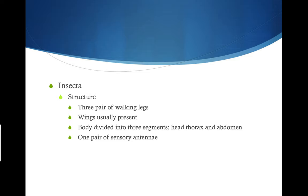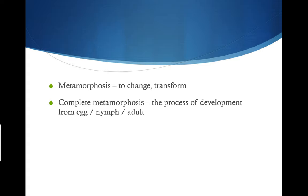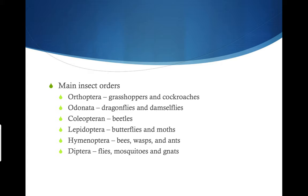Moving on to insects — their structures: they have three pairs of walking legs, so a total of six legs. Usually on insects you can see the wings, though not all insects can fly, they still have wings present. The body is divided into three segments: head, thorax, and abdomen. They have one pair of sensory antennae — so two antennae. Some insects also have the ability to perform metamorphosis, which means to change or transform. Complete metamorphosis is the process of development going from an egg to the nymph and then to the adult — like a caterpillar becoming a butterfly.